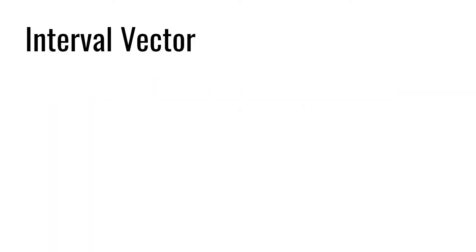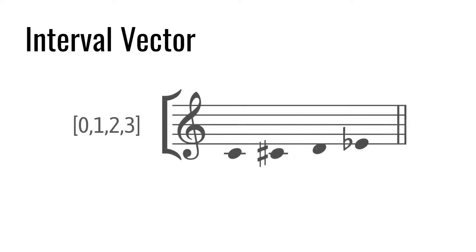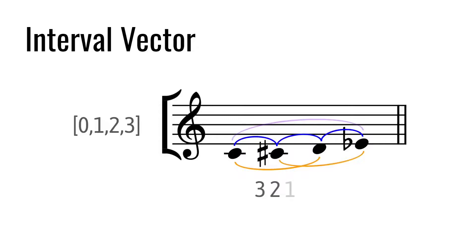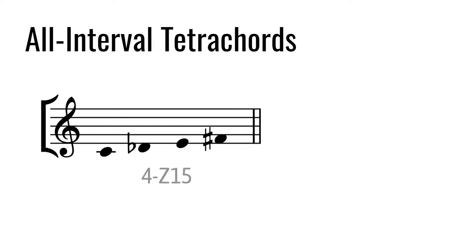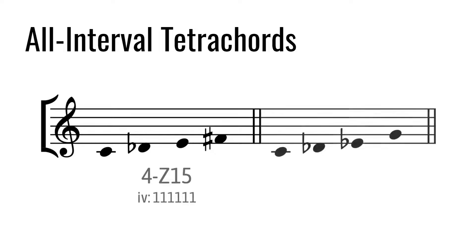For example, let's take set 4-1: {0, 1, 2, 3}. This set contains three occurrences of i1, two of i2, and one of i3. Therefore, its interval vector is 3, 2, 1, followed by three zeros. Interestingly, there are only two PC sets with cardinal 4 in which the vector doesn't have any entry equivalent to zero: 4Z15 and 4Z29, which are commonly known as the all-interval tetrachords. These two PC sets are a Z-related pair, a concept which I'll explain in a moment, and they were used extensively by Elliott Carter in the composition of many of his works.